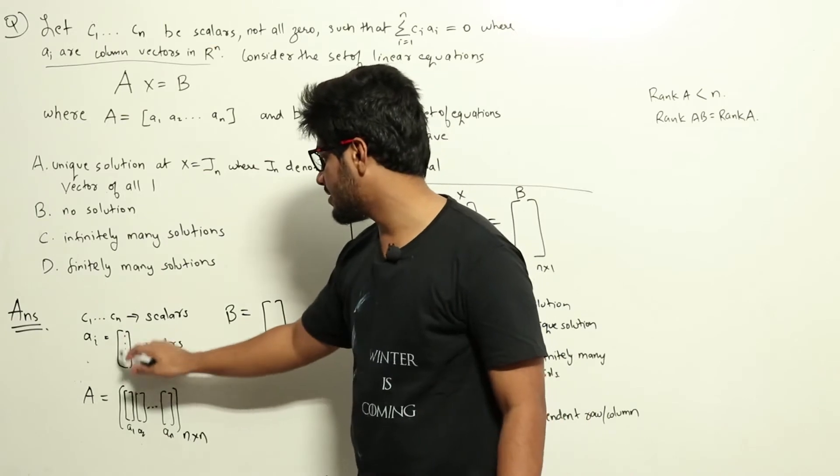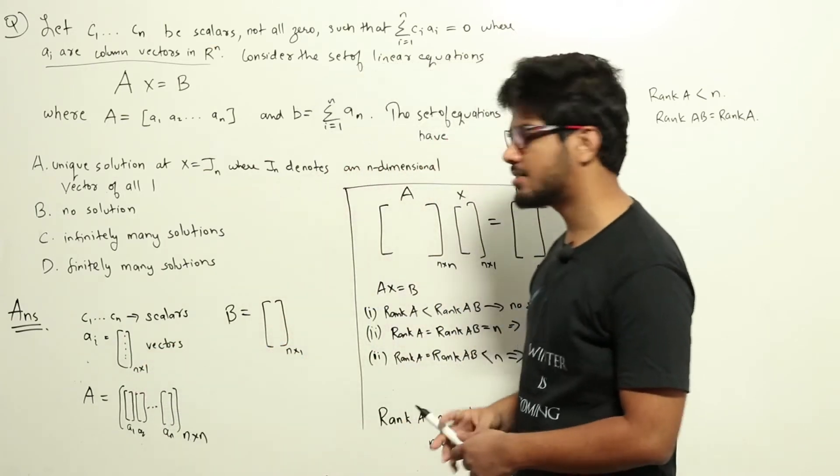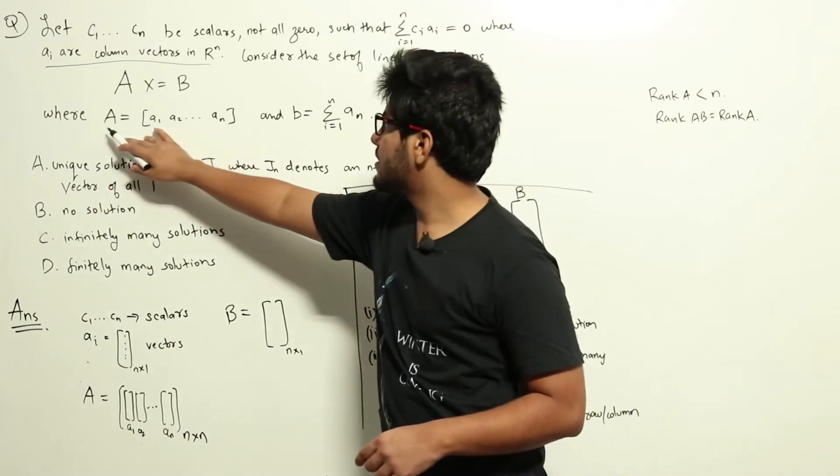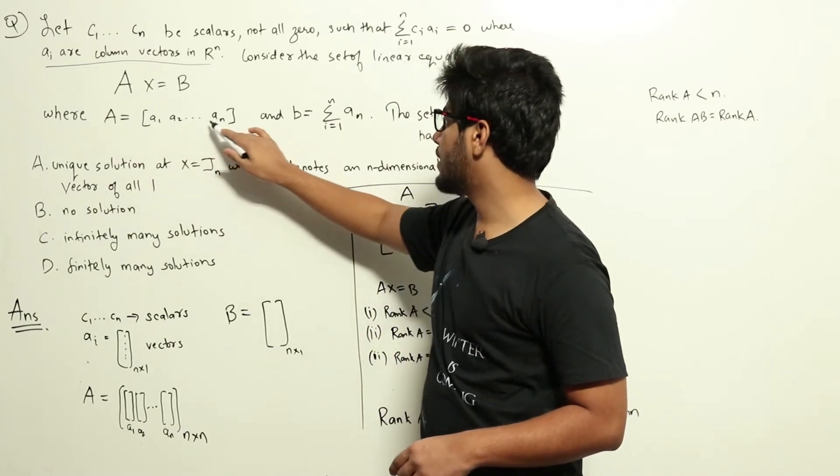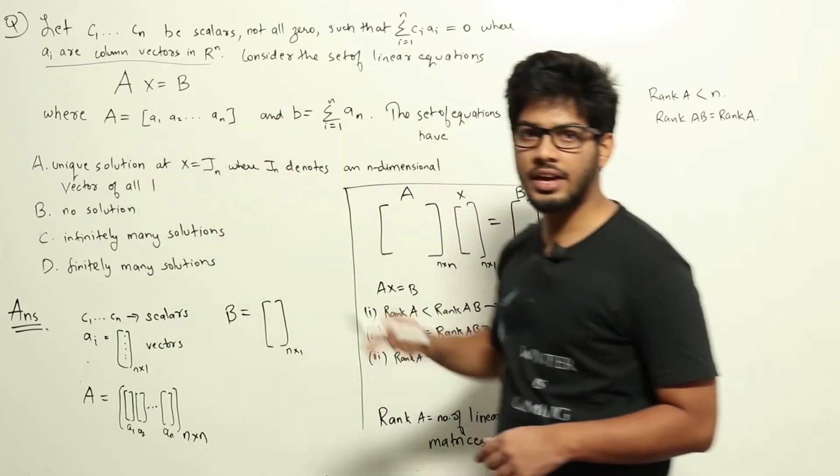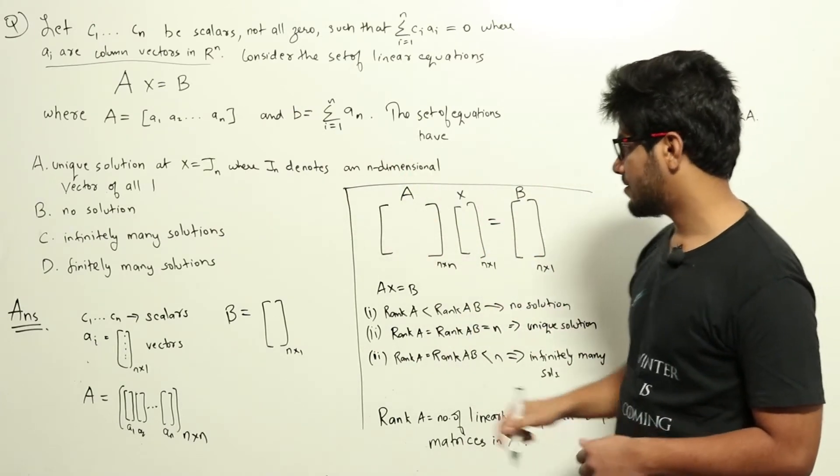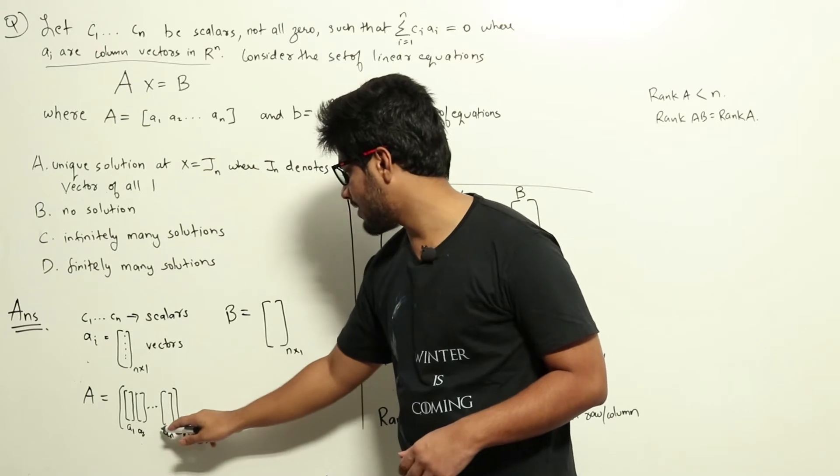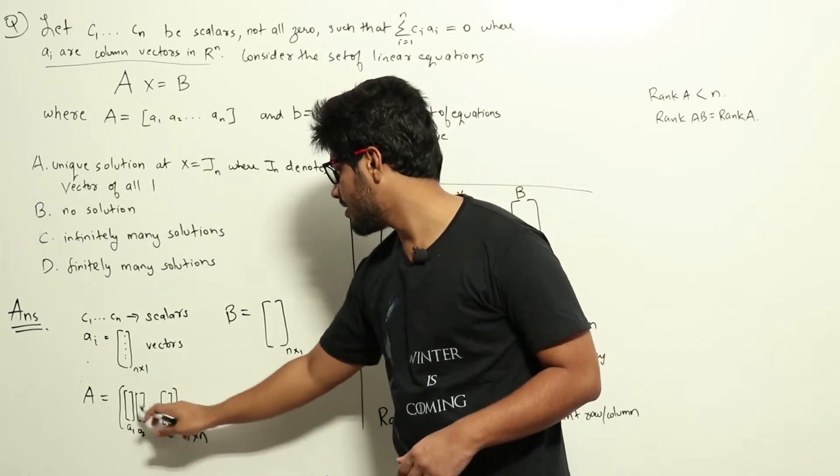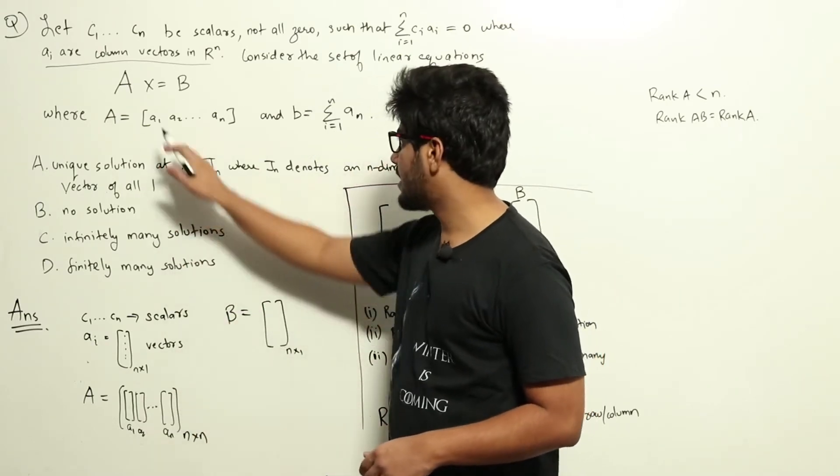So ai can be written like this. Each ai's, and A is nothing but the combination of a1, a2, a3, up to an. So we can write a1, a2, up to an as column vectors. These are n by 1 vectors and there are n vectors like that.